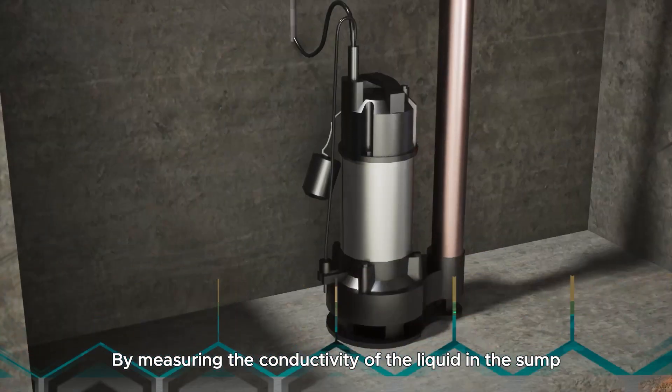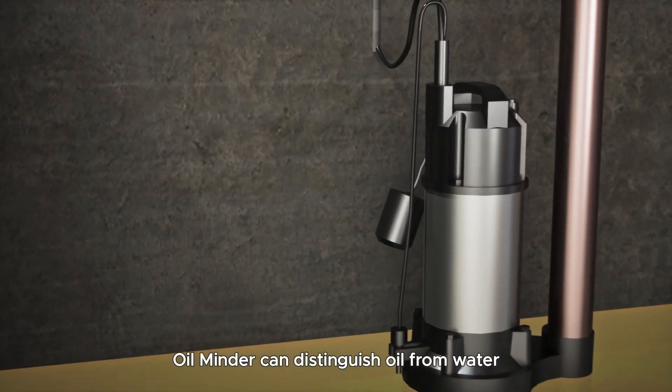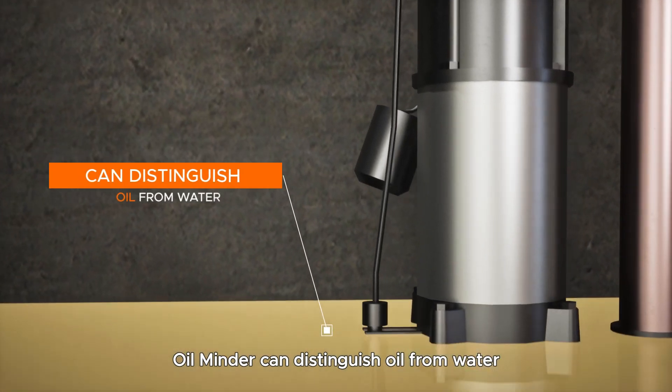By measuring the conductivity of the liquid in the sump, OilMinder can distinguish oil from water.